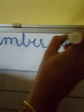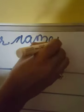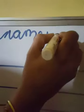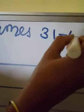So children, first we will write the number names 31 to 40. Children, your writing should be in cursive only, okay? Now let's start.